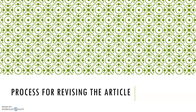The process for revising the article: I first looked through all the comments given by our professor and our peers. Then I went back and changed any grammar mistakes that were pointed out. After that, I went back to look at the comments again and wrote down things that I could improve, such as adding more information to some sections.